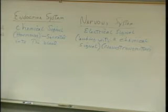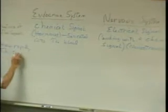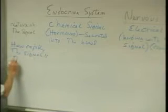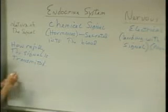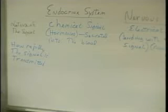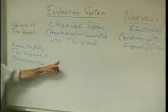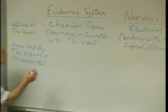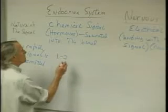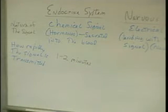How about how rapidly the signal is transmitted? With the hormones, they have to be secreted into the bloodstream and then sent around the body by the bloodstream. That's fairly fast — about a minute or so for the hormone to get into the bloodstream, and maybe a minute at most to get all around the body. So one to two minutes for the signal to get from the endocrine gland to its target organs.